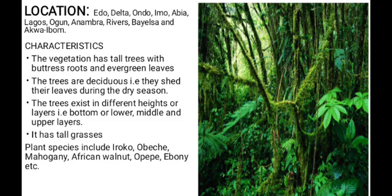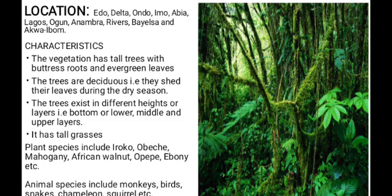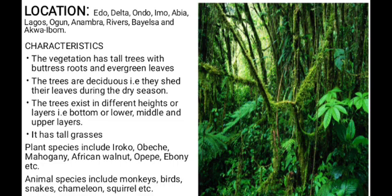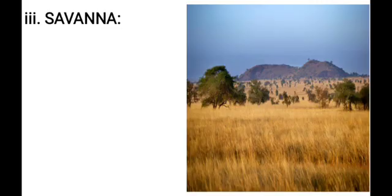Plants found in the tropical rainforest include Iroko, Obeche, Mahogany, African walnut, Okpepe, Ebony, and others. Animal species found in this habitat include monkeys, birds, snakes, chameleons, squirrels, and so on.